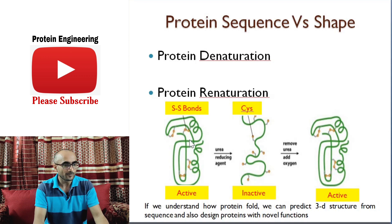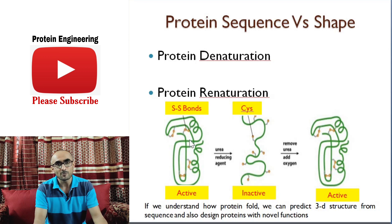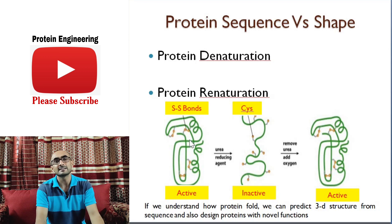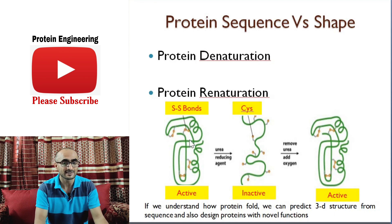From Anfinsen's experiment, it was concluded that the shape of a protein — the three-dimensional structure of a protein — is determined by its amino acid sequence.